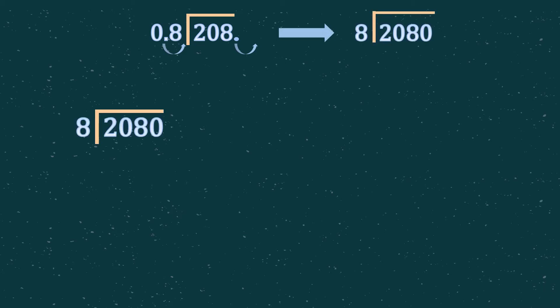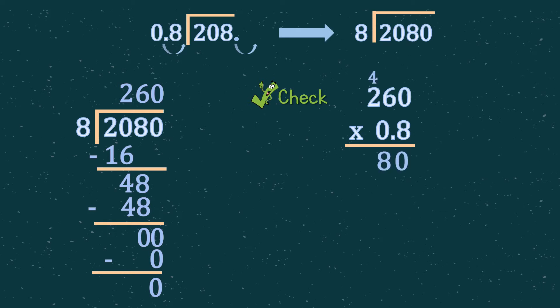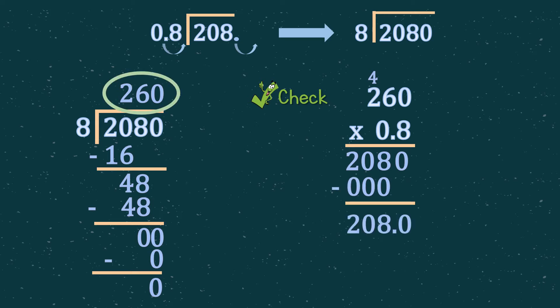Let's have another example: 208 divided by 0.8. Therefore, our answer will be 260.